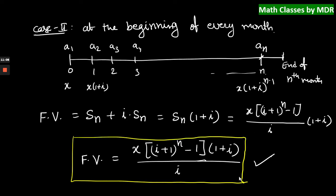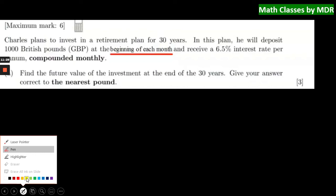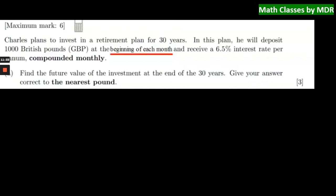Now let us see a problem. Charles plans to invest in a retirement plan for 30 years. In this plan, he will deposit £1000 at the beginning of each month at an interest rate of 6.5% per annum compounded monthly. So X = 1000, the monthly interest rate i = 6.5/1200, and the number of months n = 30 × 12 = 360 months.